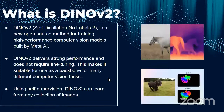So what is DINOv2? DINOv2 is a new open source method for training high performance computer vision models built by Meta AI. DINOv2 delivers strong performance and does not require fine tuning, making it suitable for use as a backbone for many different computer vision tasks. Using self-supervision, DINOv2 can learn from any collection of images.